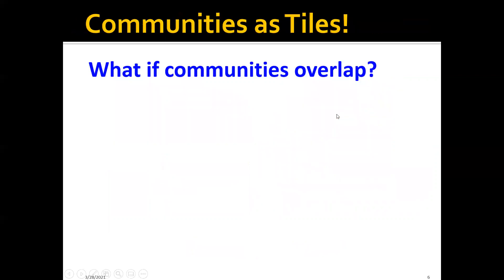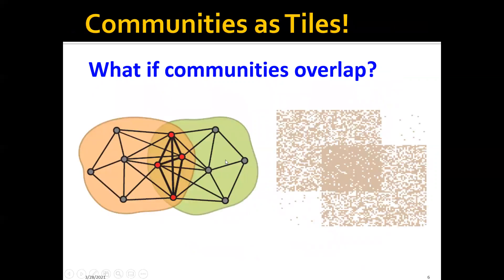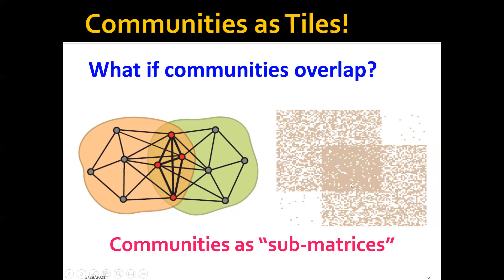But what if the communities overlap? In this case, it's not a very good idea to pose it as a graph cut problem because you really don't know where to cut. But luckily, if you look at the adjacency matrix of this graph, you can still see that this submatrix belongs to the first community and this other submatrix belongs to another community. So basically, we can treat the community as submatrices, and detecting the community in this graph will be posed as a problem of discovering relatively dense submatrices.